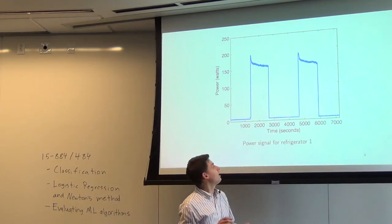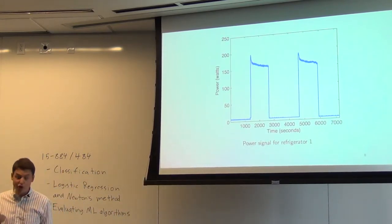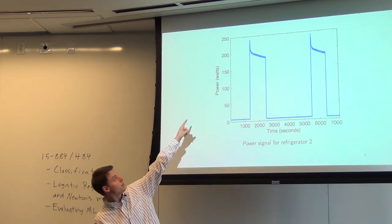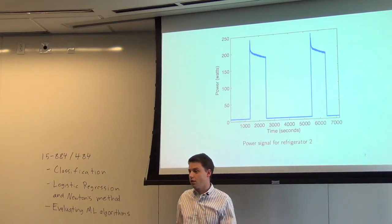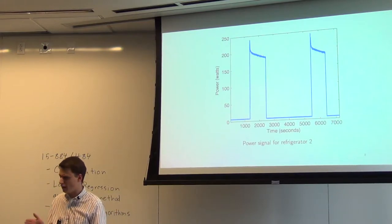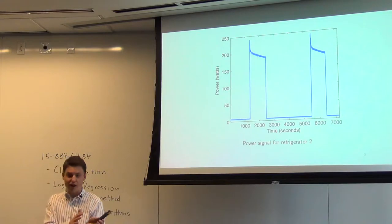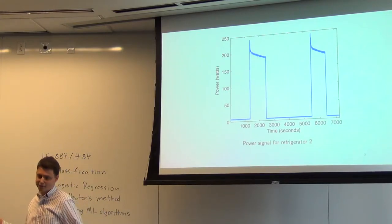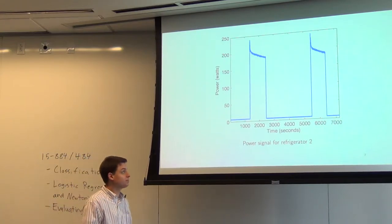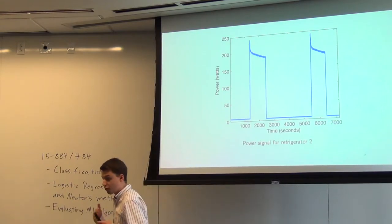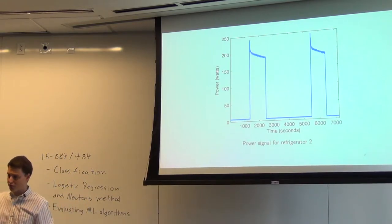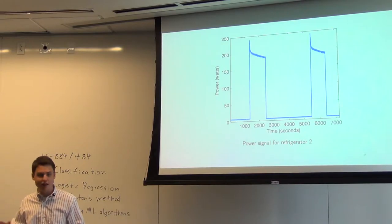Not only can you guess it's a refrigerator, but different refrigerators have different characteristics. This second refrigerator consumes a little more power but stays on for less time. The task I'll start with is just distinguishing between these two refrigerators — a binary task: is it refrigerator A or refrigerator B? You might want to detect the model automatically without asking the user. Later, I'll talk about distinguishing a refrigerator from everything else, though that's a harder problem.